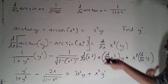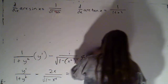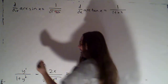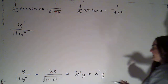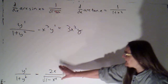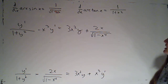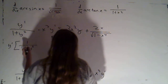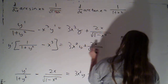Now I want to get all the terms with a y prime together on one side of the equation and everything without a y prime on the other side. I'll keep the y primes on the left: y prime over 1 plus y squared, minus x cubed y prime. Over on the right we've still got 3x squared y, plus 2x over root 1 minus x to the fourth. So I can factor out a y prime: y prime times the quantity 1 over 1 plus y squared minus x cubed, equals 3x squared y plus 2x over root 1 minus x to the fourth.